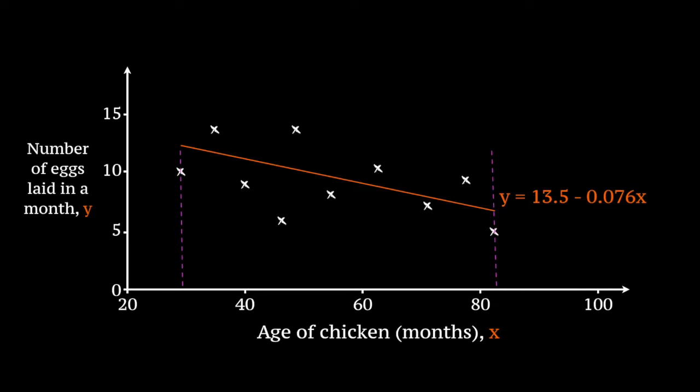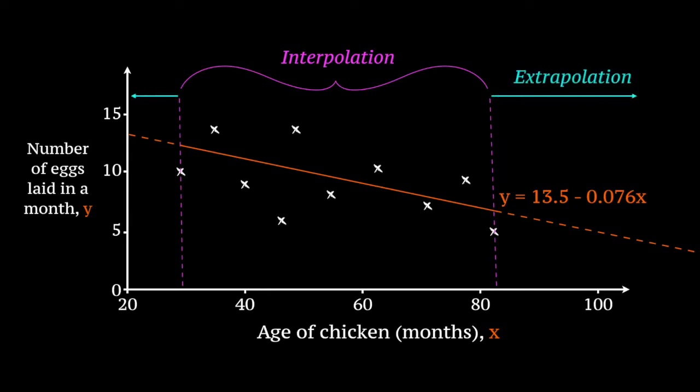Making predictions inside of the range of data that we have is called interpolation, and it gives a fairly reliable result. However, if you wanted to estimate the number of eggs that a chicken which is 100 months old would lay, you'd be estimating outside of the range of data, and that's called extrapolation. Extrapolation is much less reliable than interpolation, because you'd have to assume that the regression line would still hold.